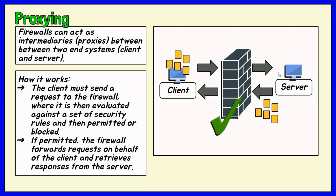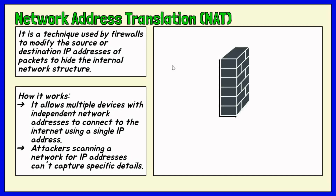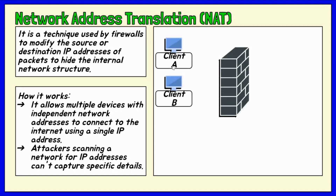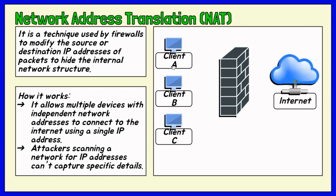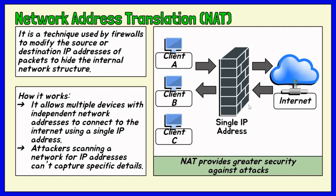Firewalls can also use a technique called Network Address Translation or NAT. Firewalls can modify the source or destination IP addresses of packets to hide the internal network structure. NAT firewalls act as intermediaries between a group of computers and outside traffic, allowing multiple devices to connect to the internet using a single IP address while keeping individual IP addresses hidden. As a result, attackers scanning a network for IP addresses can't capture specific details, providing greater security against attacks.